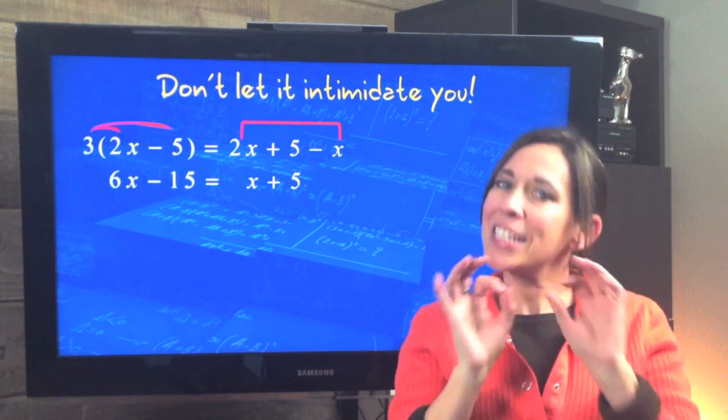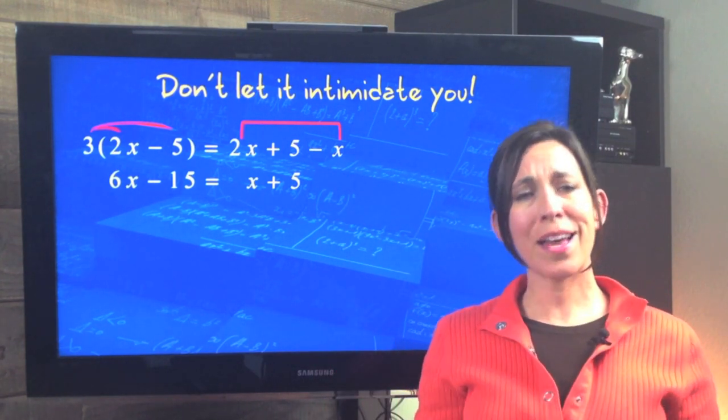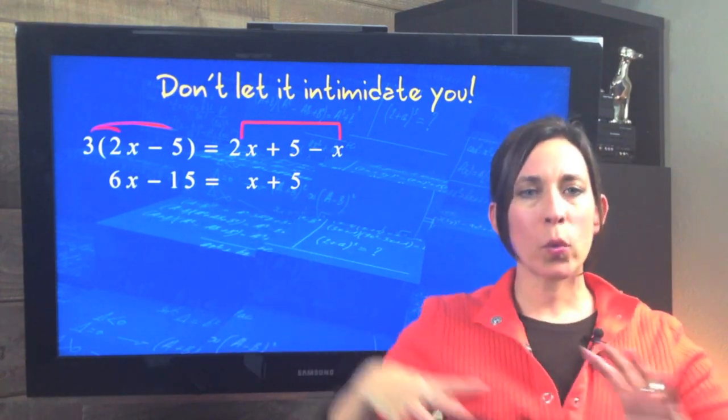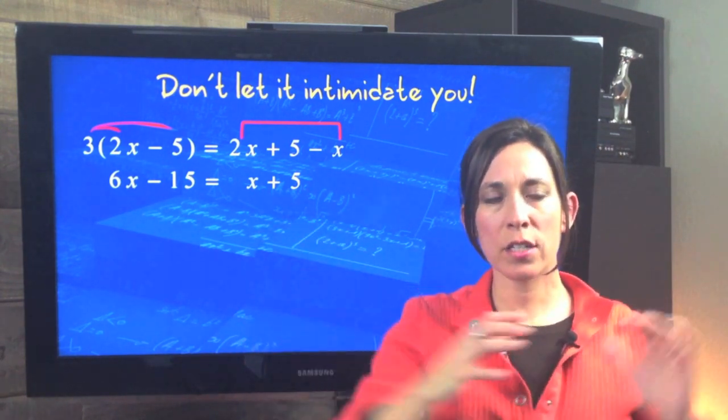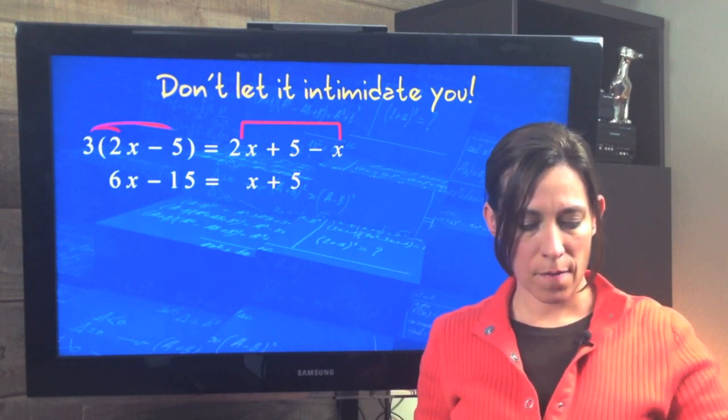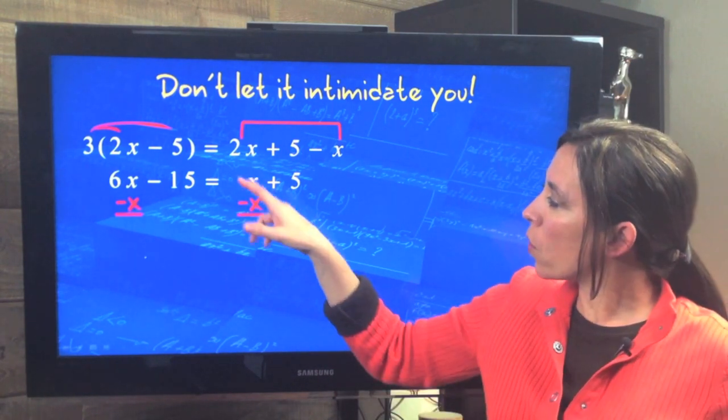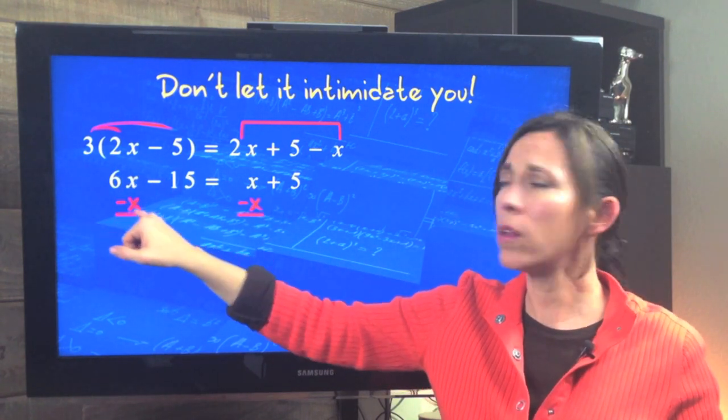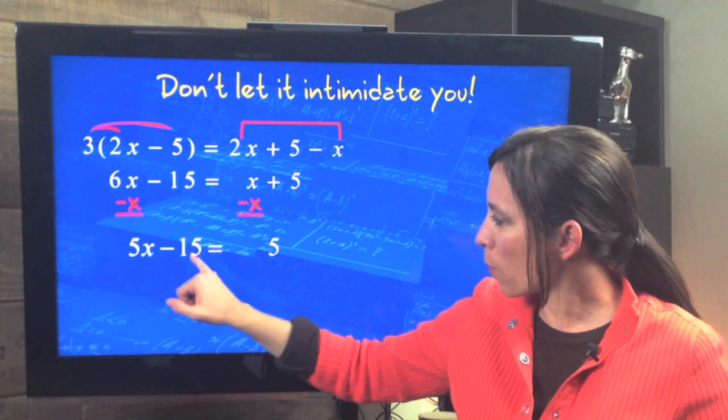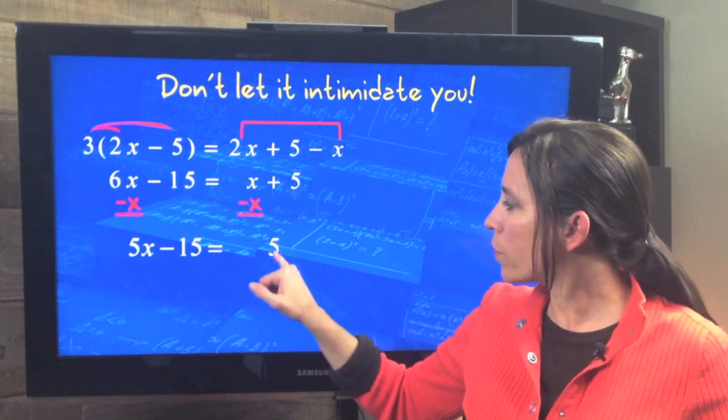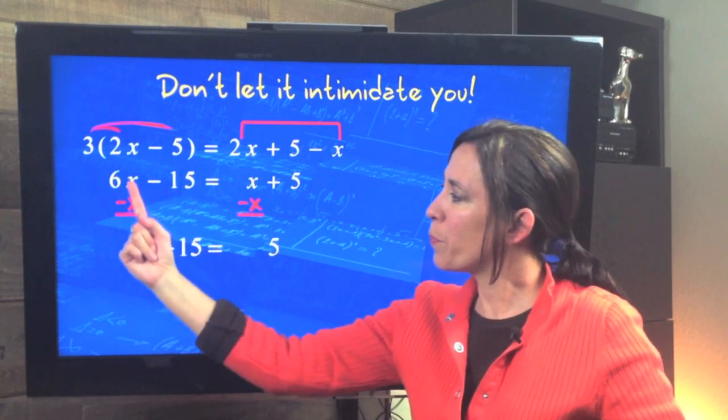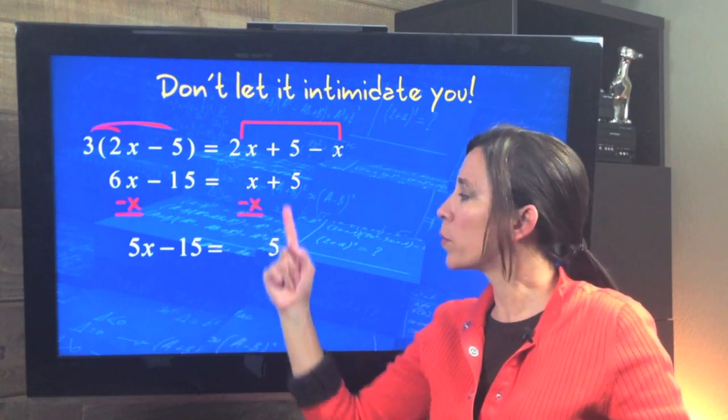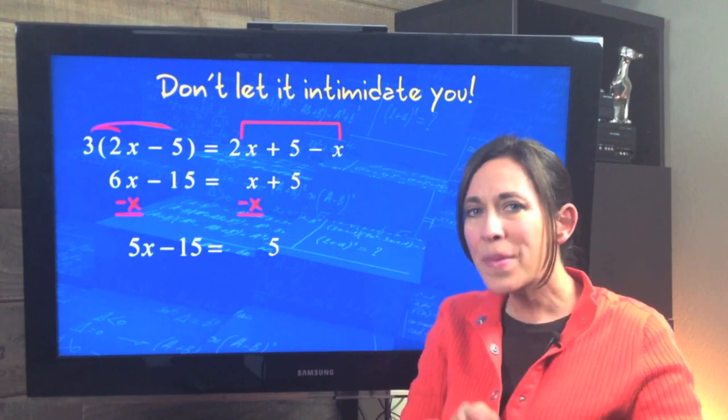But remember our goal is to whittle it down to get x equals a number. How many x's do we have? Two, right? One on the left, one on the right. So we need to use addition and subtraction to move one of those x terms. So I'm getting rid of the x here. I'm going to subtract the x. But again, we have to do it on the other side as well. That leaves us with the 5x. Bring down your minus 15 equals 5. So as you're working it, be sure you're bringing down everything. This is 0, so that's why it's not showing up, the plus 5. And if you kind of focus on that, you're not going to miss anything. That's where the careless errors tend to come in.